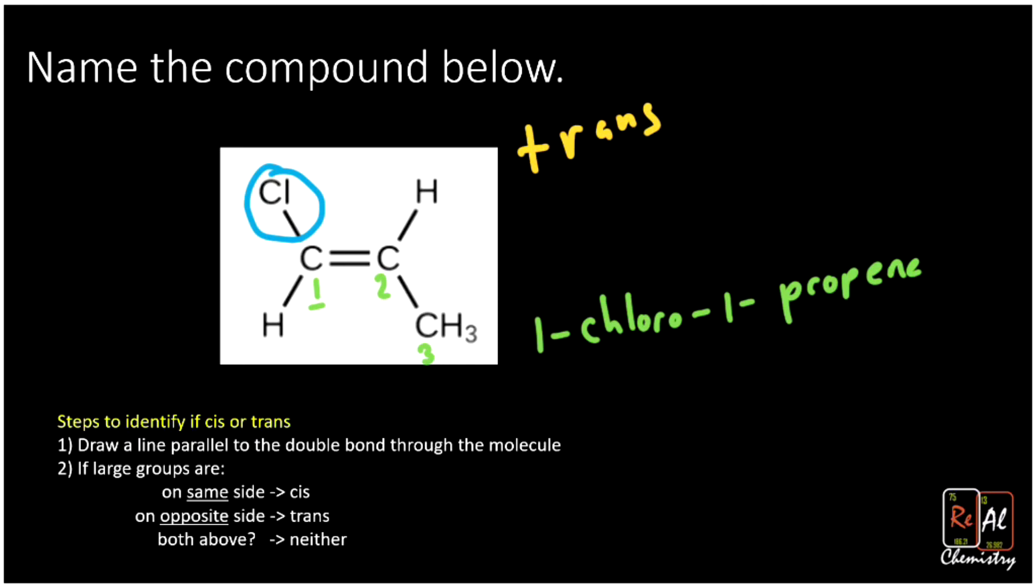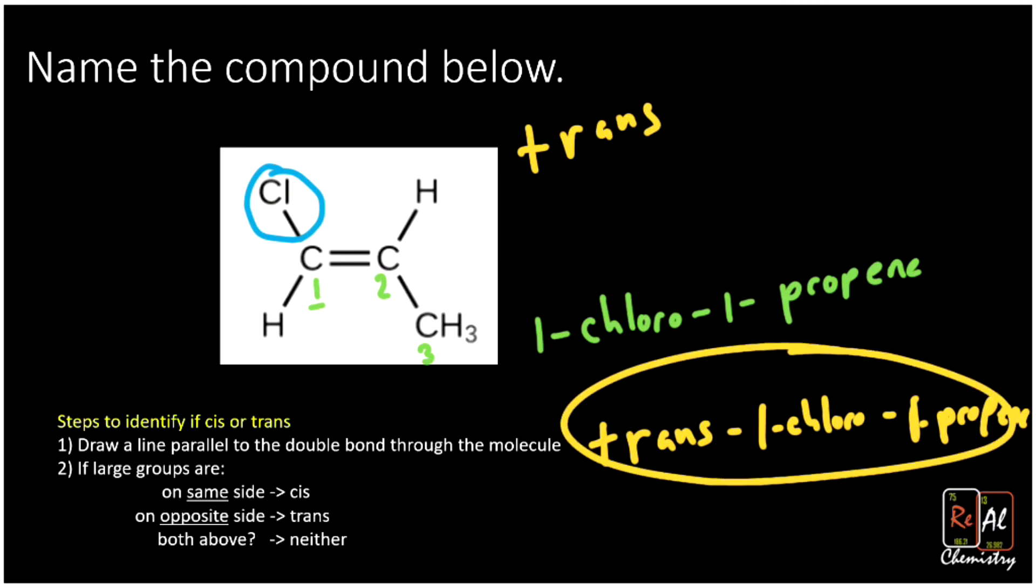But now that we know about cis and trans, we can make it a little better. And the way we do that is just by tacking trans on the front of it. So it becomes trans-1-chloro-1-propene. Okay. So that's the best name. Trans-1-chloro-1-propene is the best name of that compound.